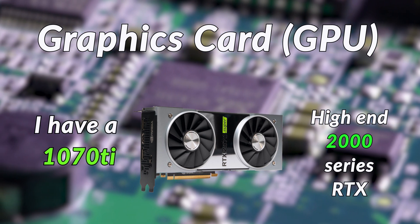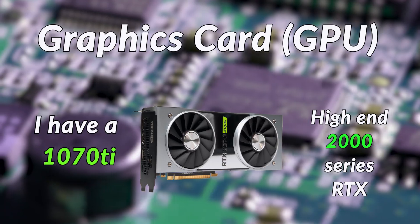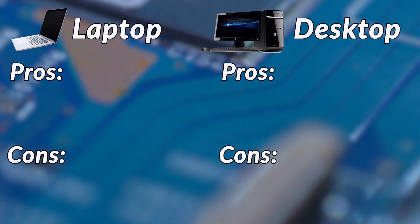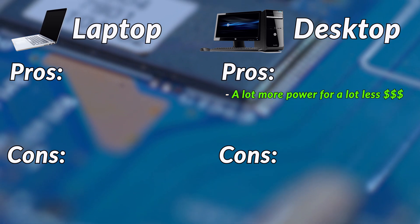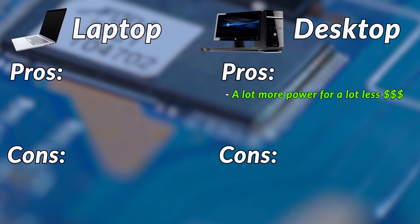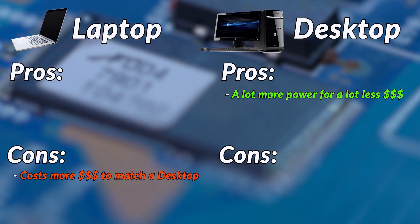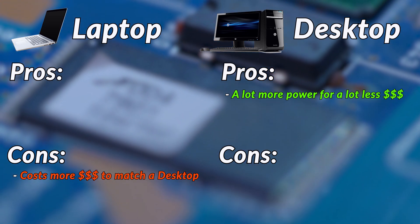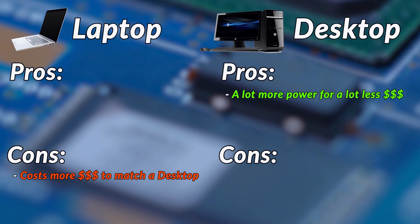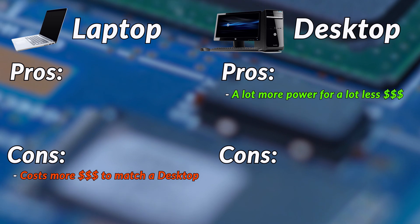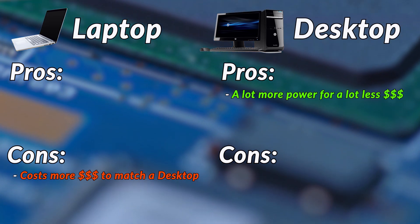Let's get into the pros and cons of getting either a desktop or a laptop for animation. The pro of getting a PC is that you're getting a lot more bang for your buck — you can get a lot more power for a lot less money spent. The con of a laptop is that it's more expensive and comes with a limited amount of power for the money you're spending, so if you want to get the same power as you would have on a PC, you'd have to spend a lot more money on a laptop.